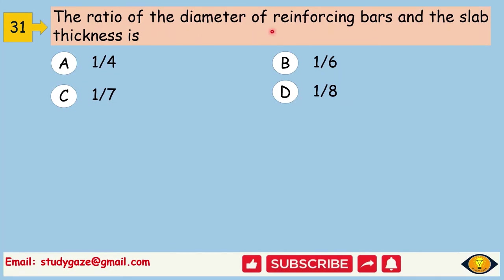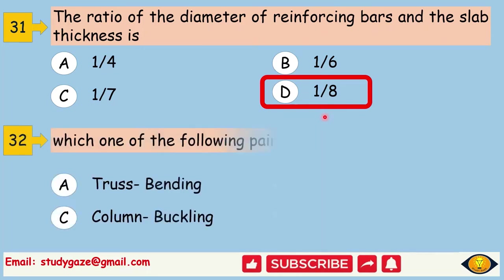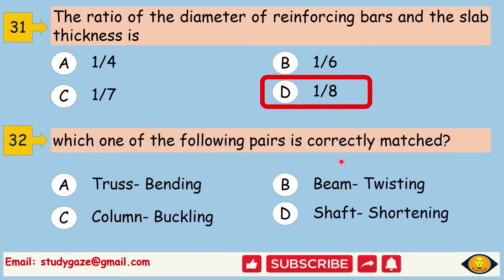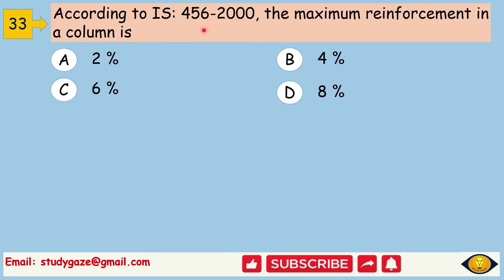The ratio of the diameter of reinforcing bars and the slab thickness is. Answer is 1 by 8. Which one of the following pairs is correctly matched? Answer is Column buckling. According to IS 456-2000, the maximum reinforcement in a column is. Answer is 6%.